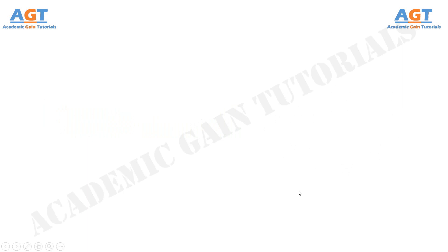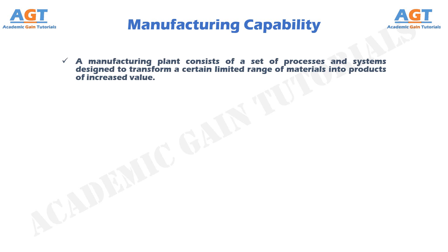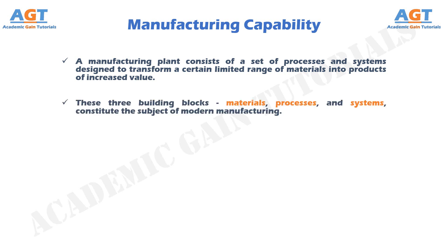A manufacturing plant consists of a set of processes and systems, and people of course, designed to transform a certain limited range of materials into products of increased value. These three building blocks — materials, processes, and systems — constitute the subject of modern manufacturing. There is a strong interdependence among these factors.